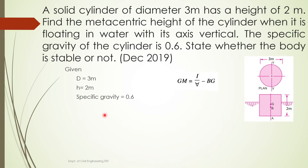In order to state whether the body is stable or not, we look at the value of metacentric height: if it is positive the body is stable, if it is negative it is not stable. The equation for metacentric height is GM = I / V̄ − BG, where BG is the distance between center of buoyancy and center of gravity, I is the moment of inertia of the body at the water level about the YY axis, and V̄ is the volume of the body immersed in water.